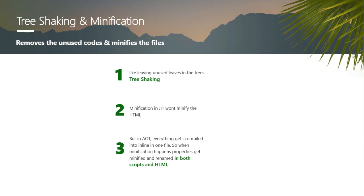What is the specialty of AOT here? When we use just-in-time, it won't minify the HTML codes if a property is used in both scripts and the HTML file. But when we use AOT, everything gets compiled inline into one file. When minification happens, properties get minified and renamed in both the scripts and HTML files, giving us better performance. When I say performance here, I mean network performance — the files are reduced, longer variable names and properties get renamed to smaller sizes, and files are minified and uglified during build time. The browser won't have to do anything extra.